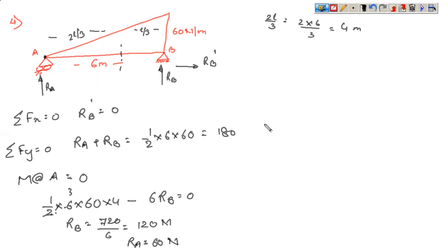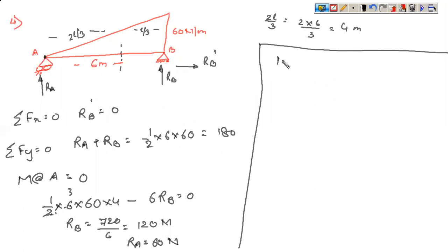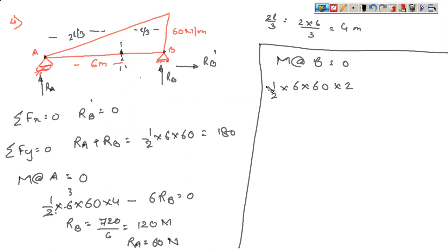Solving the moment equation: 720 minus 6 RB equals zero, so RB equals 720 divided by 6 equals 120 Newton, and RA equals 60 Newton. Verification by taking moment about point B: total load half into 6 into 60 is resolved at L/3 from the larger end, which is 6 divided by 3 equals 2 meters from B — anti-clockwise so negative. Plus 6 RA equals zero. Solving gives RA equals 60 Newton and therefore RB equals 120 Newton.